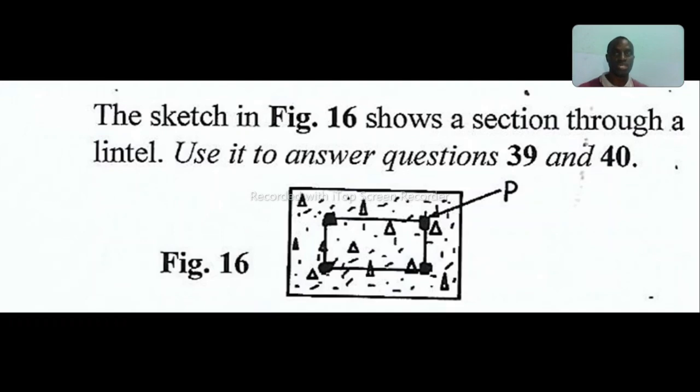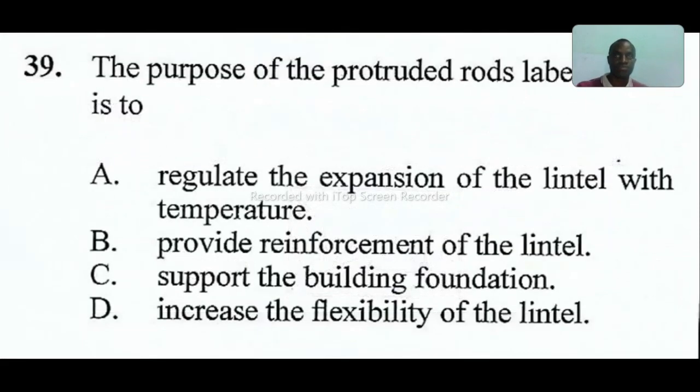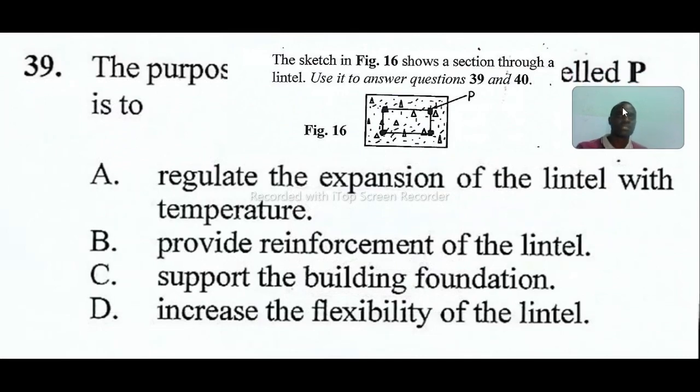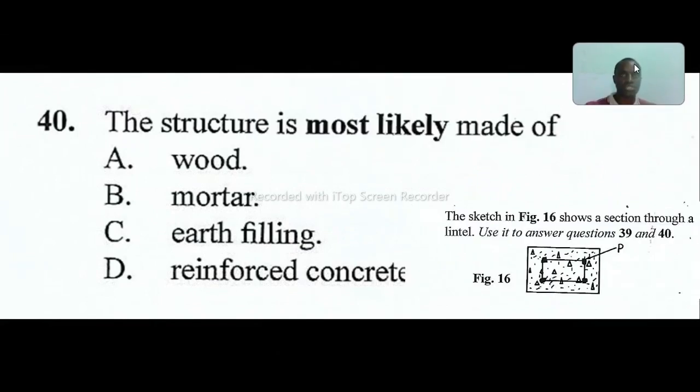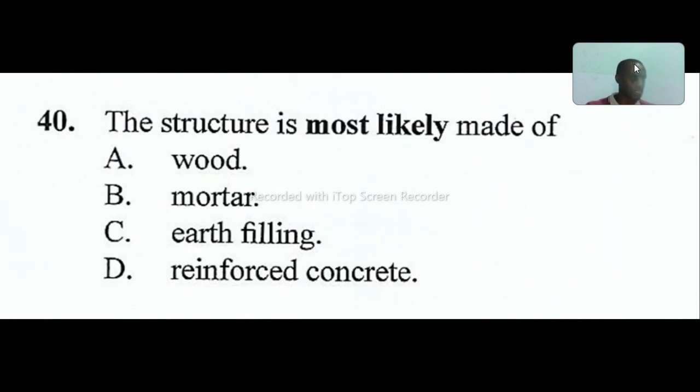This diagram is used to answer questions thirty-nine and forty. Question thirty-nine: the purpose of the protruded rod shown, part labeled P, is to provide reinforcement of the lintel. Make the lintel stronger and firmer. Question forty: the structure is most likely made of reinforced concrete. The answer is D.